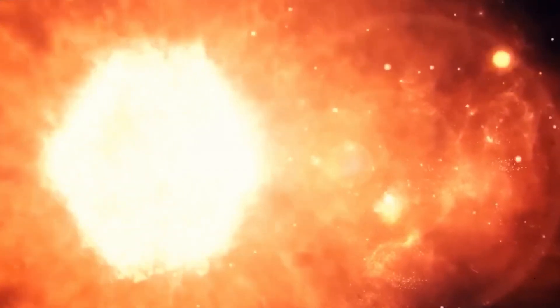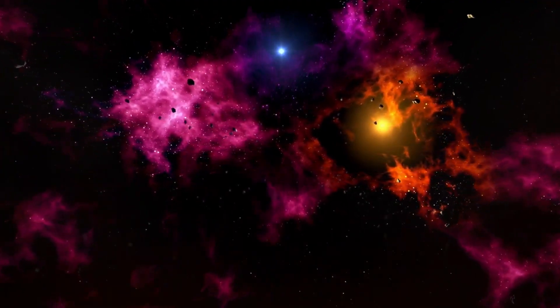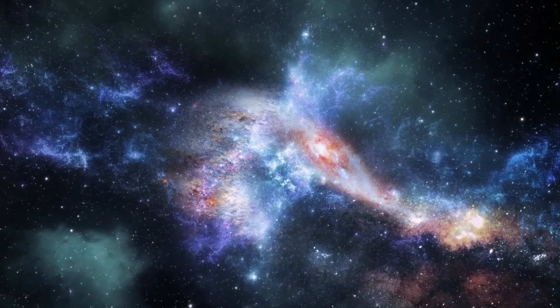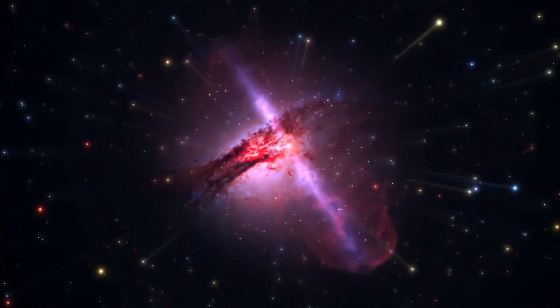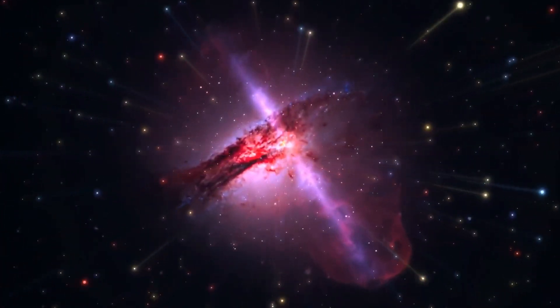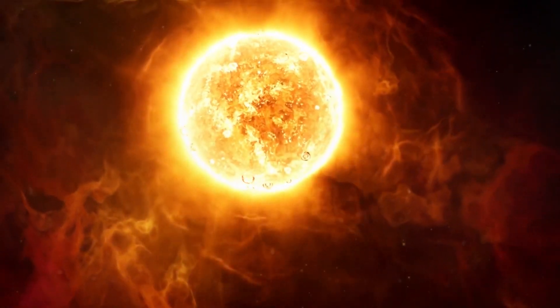Inside Betelgeuse, a process called convection causes warmer gas to rise and cooler gas to fall. Because of the waves this motion makes, the star's atmosphere grows and shrinks. This process of expanding and contracting is what makes Betelgeuse so bright.